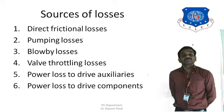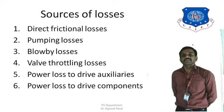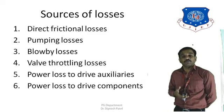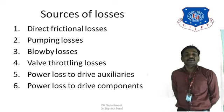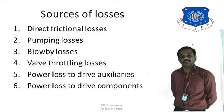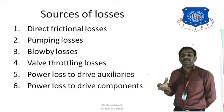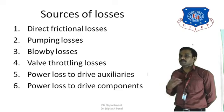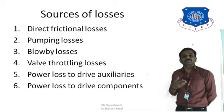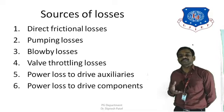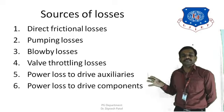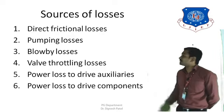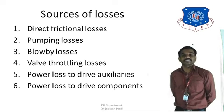The fifth source of loss is the power required to drive auxiliaries such as fuel pumps and oil pumps, which consume a certain amount of power. The sixth is the power required to drive components such as the supercharger and turbocharger. The supercharger is mechanically coupled to the engine and draws power directly from it. The turbocharger runs on exhaust gases but creates back pressure, requiring more pressure to push gases out. These are the different sources of losses in IC engines.